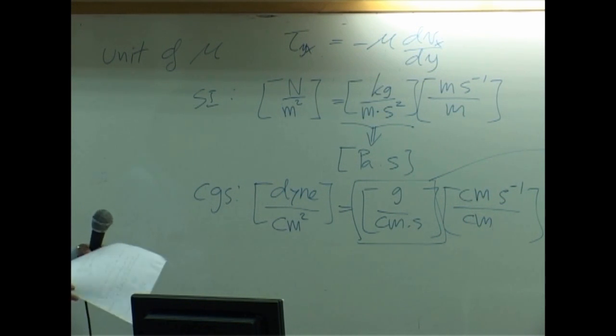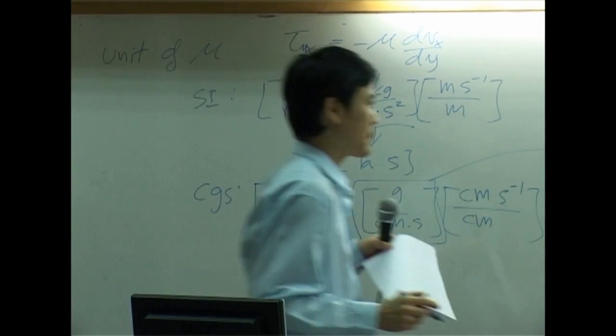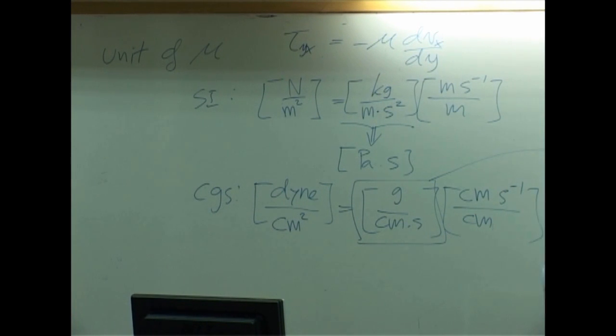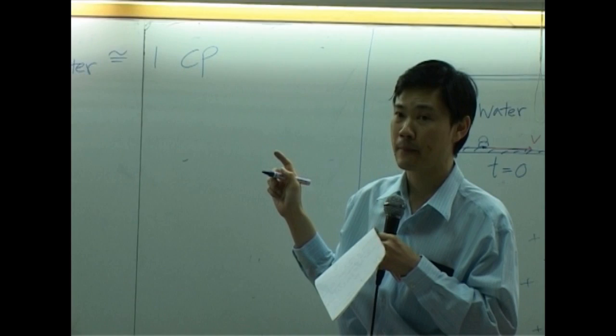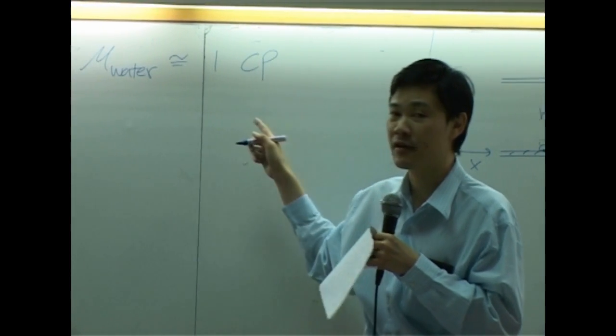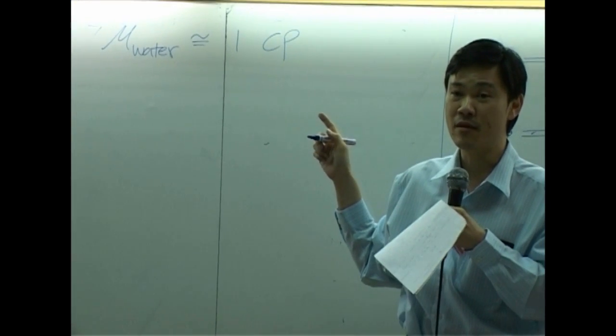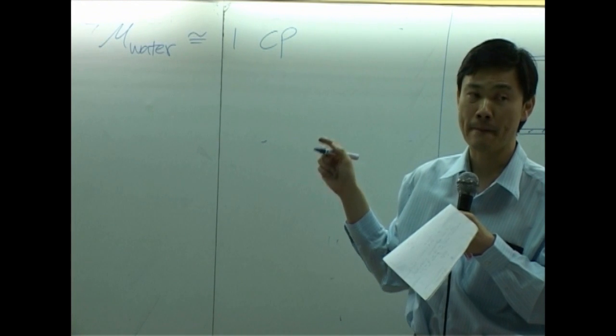And viscosity of water is approximately equal to one centipoise. That means ten to the minus two poise. And this value here, you should be able to remember.